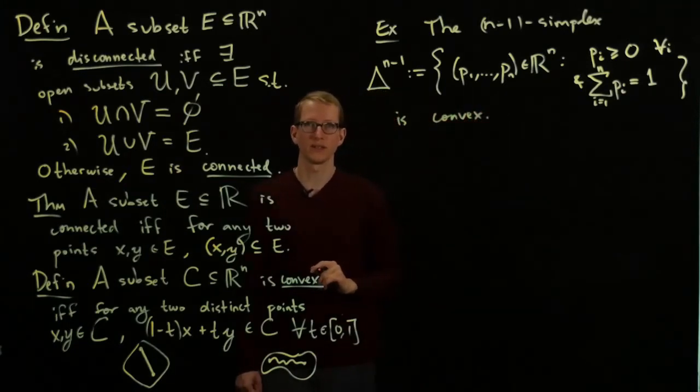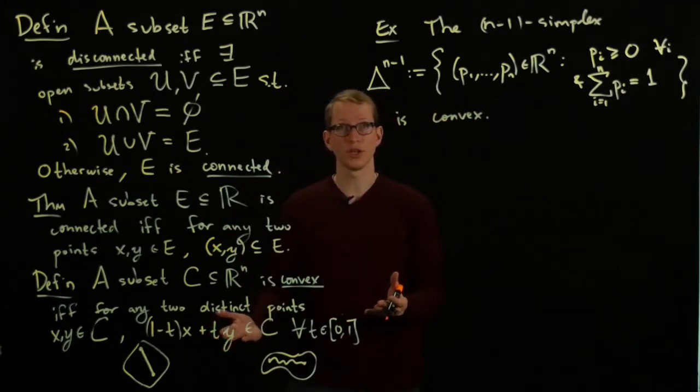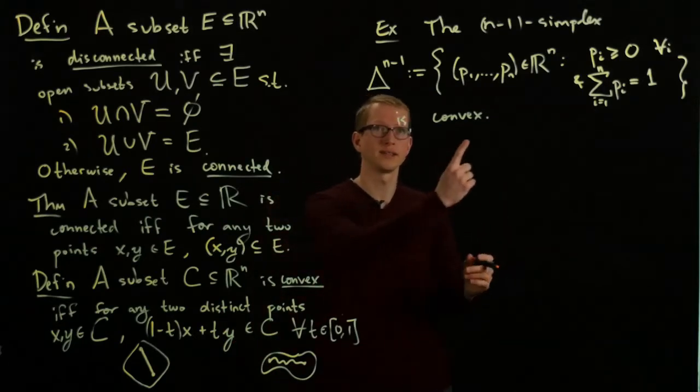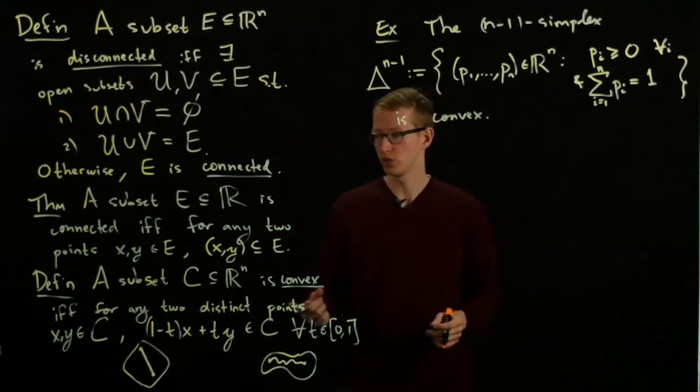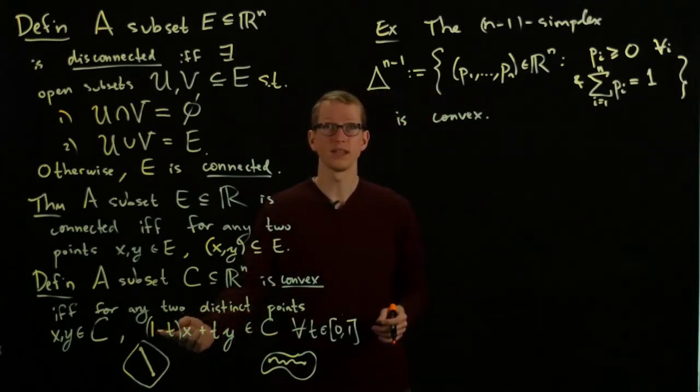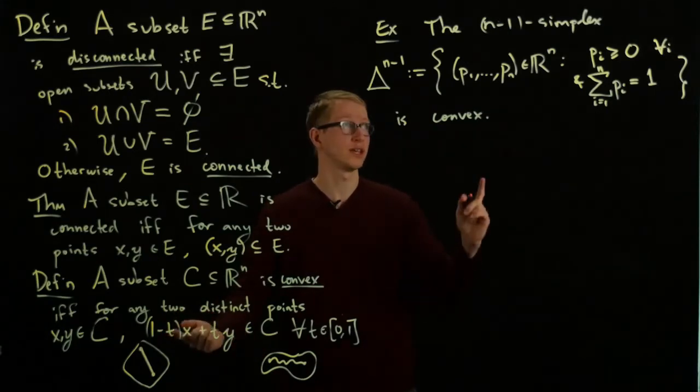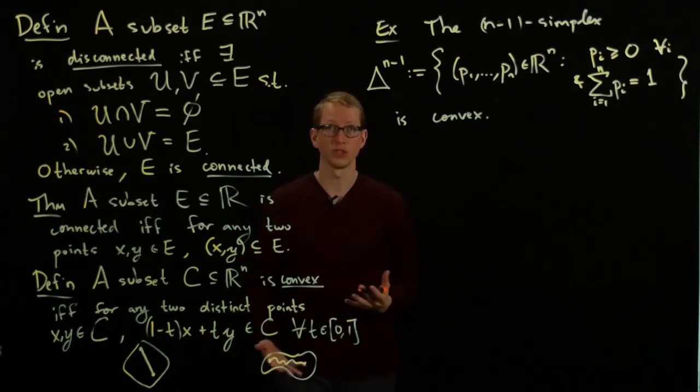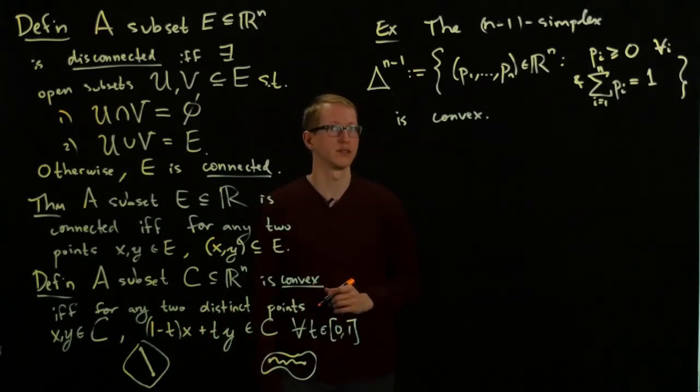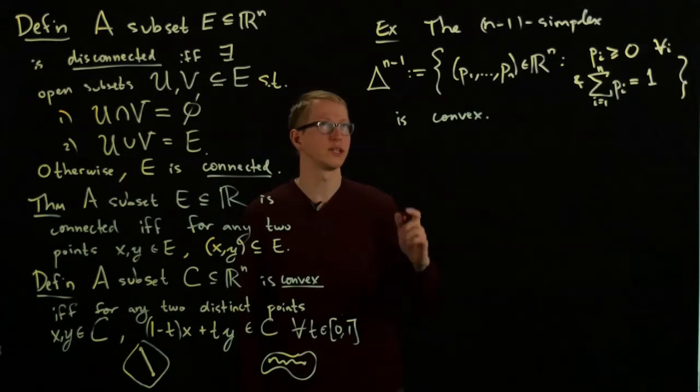This is an example of a convex set. You should check this condition to make sure it's true. For any two points satisfying these conditions, the set of all these points should also satisfy this condition for all T. It's just an algebraic manipulation. I leave that to you as an exercise.